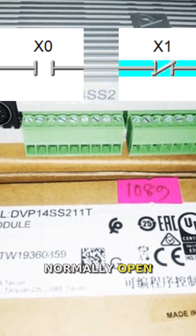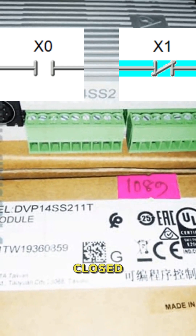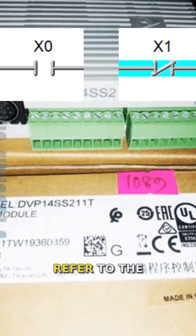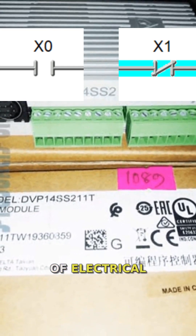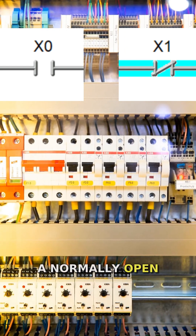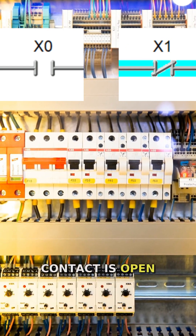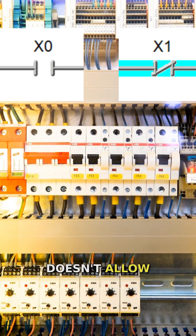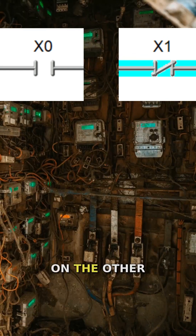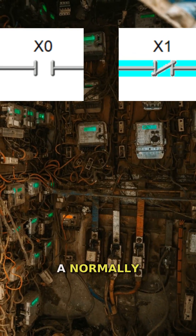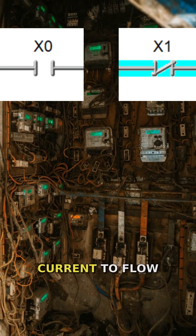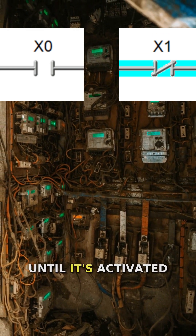Normally open, or NO, and normally closed, or NC, refer to the default state of electrical contacts in a circuit. A normally open contact is open by default, meaning it doesn't allow current to flow until activated. On the other hand, a normally closed contact is closed by default, allowing current to flow until it's activated.